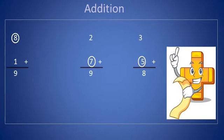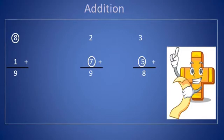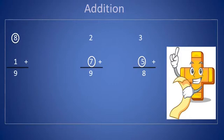We will start with the greater number, then count on to find the sum. I circle the greater number, then count on to find the sum. In the first example, the greater number is 8. In the second one, we have 2 plus 7 — which one is the greater number? Of course, 7 is the greater number.